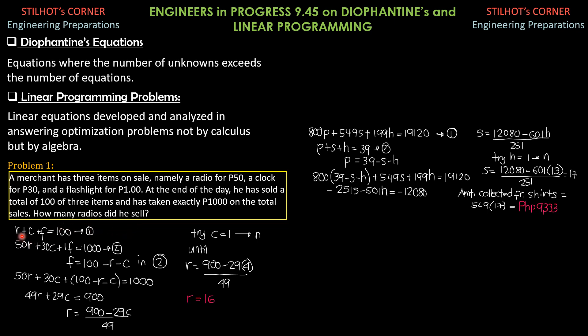For the first equation, number of radios plus number of clocks plus number of flashlights equals 100. And for the value, 1,000 pesos. Since the radio cost or his price at 50 pesos each, so we have 50 times the number of radios sold for that day plus clock 30 pesos each, so times C plus light 1 peso each times F equals 1,000.